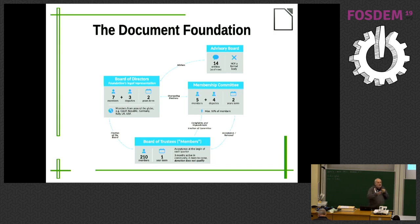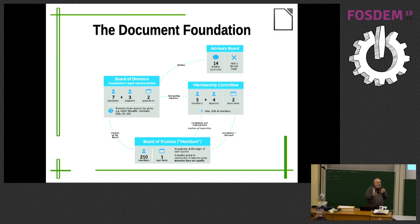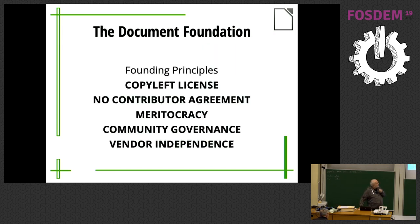Other companies are either contributing to the project or have an interest — we have Red Hat, for instance, and Collabora and CIB, which contribute to development. The five principles we decided on are: copyleft license, no contributor agreement, meritocracy-based, community governance, and vendor independence.